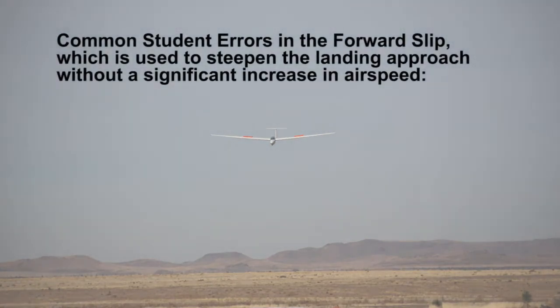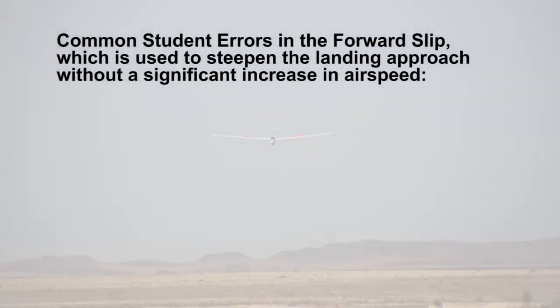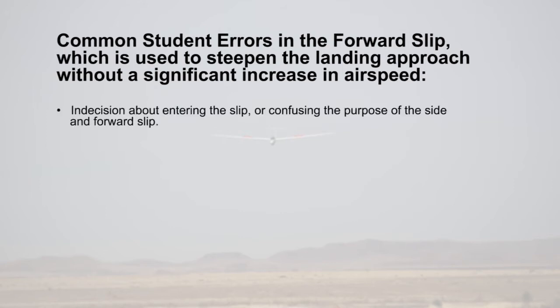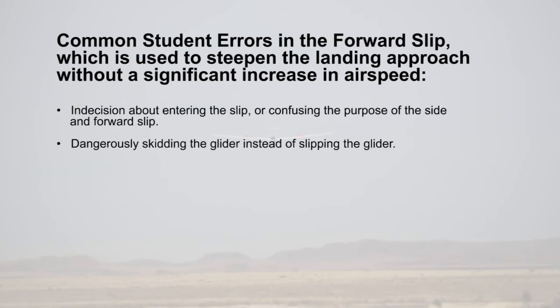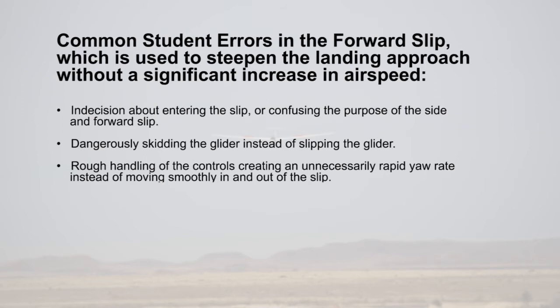Common student errors in the forward slip, which is used to steepen the landing approach without significant increase in airspeed: indecision about entering the slip, or confusing the purpose of the side and forward slips; dangerously skidding the glider instead of slipping it; rough handling of the controls, creating an unnecessarily rapid yaw rate instead of moving smoothly in and out of the slip.